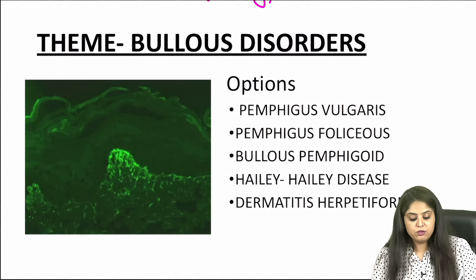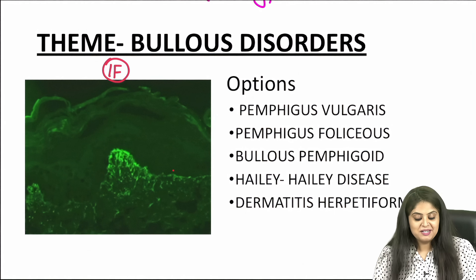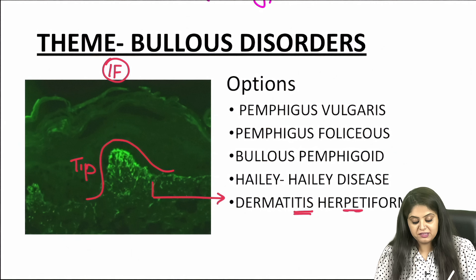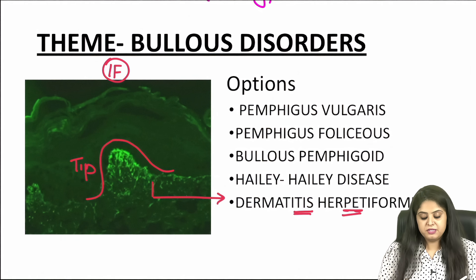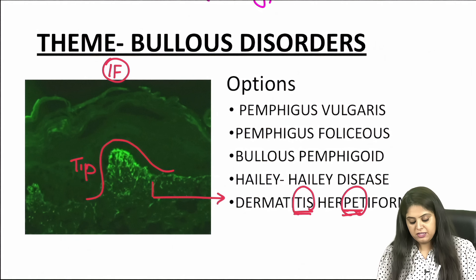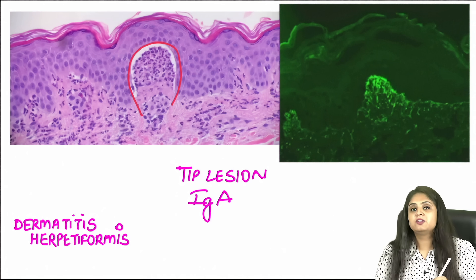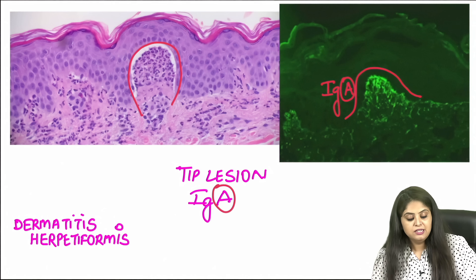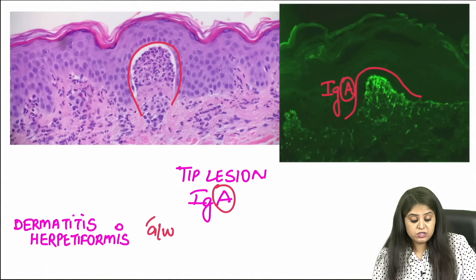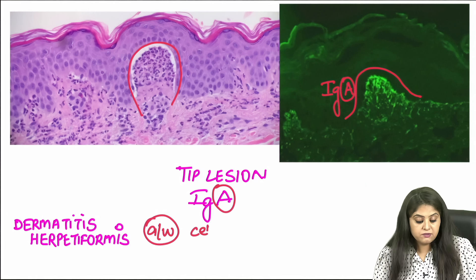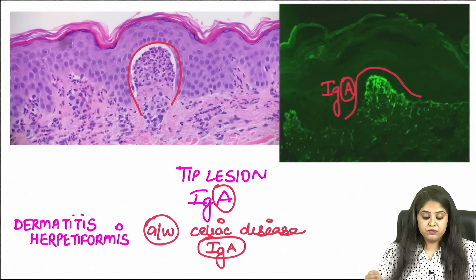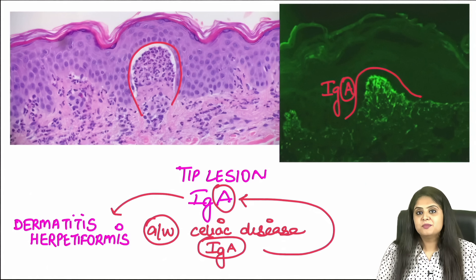Moving on to the next immunofluorescence image of bullous disorders: you see a small mountain shape known as the tip lesion, seen with dermatitis herpetiformis. This shows classical deposition of IgA antibody. Dermatitis herpetiformis is associated with the GI disorder celiac disease (gluten-sensitive enteropathy) because in celiac disease also IgA antibodies are formed. Those same IgA antibodies attack the skin, causing dermatitis herpetiformis.